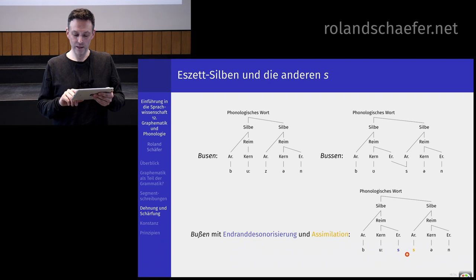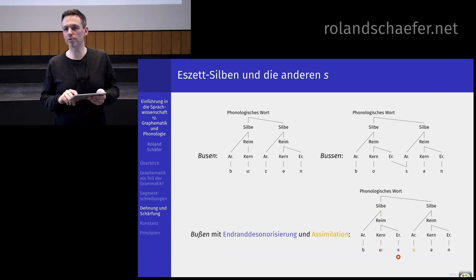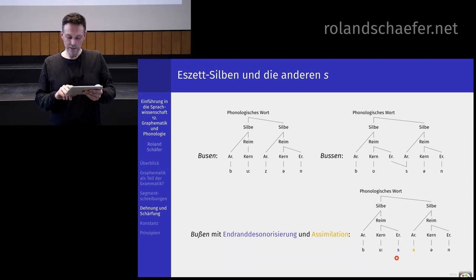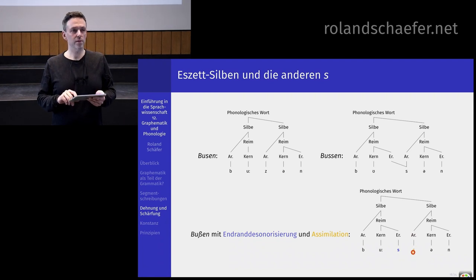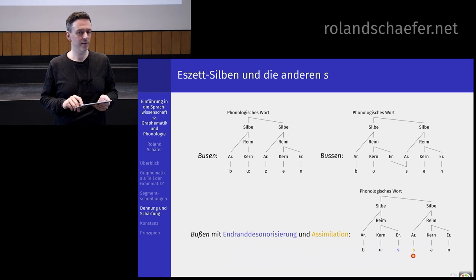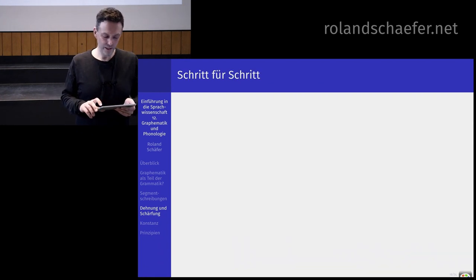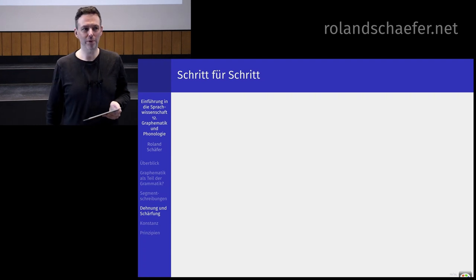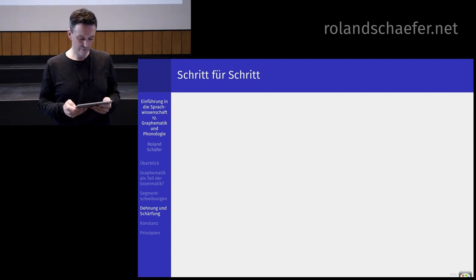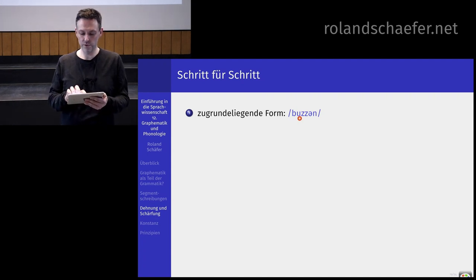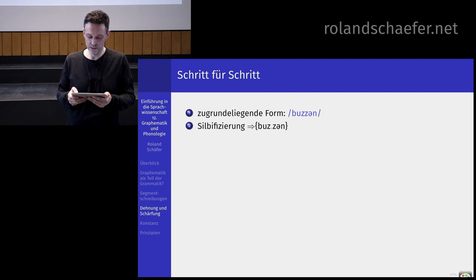Damit steht es im Endrand, die Endrand-Desonorisierung greift, das wird stimmlos und wir haben plötzlich Bussen. Für Bussen hätten wir phonetisch als Analyse: Sie hatten da zwei stimmhafte S-Laute, also Bussen. Die erste Silbe ist damit silbenfähig, keine überleichte und keine überschwere Silbe. Das zweite S gerät in den Silbenanlaut der zweiten Silbe. Das hier wird sowieso stimmlos, weil es im Endrand steht. Jetzt müssen wir nur noch erklären, warum heißt es denn nicht Bussen, sondern Bussen?